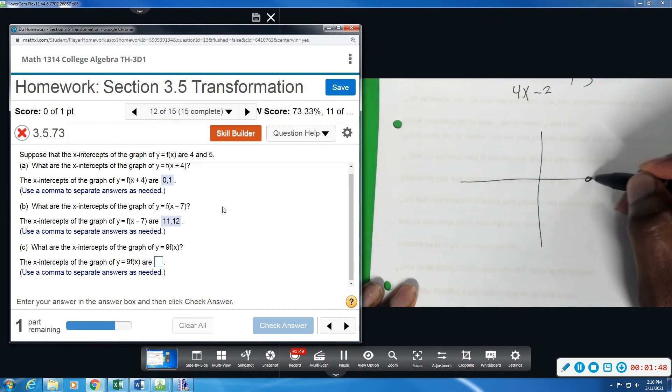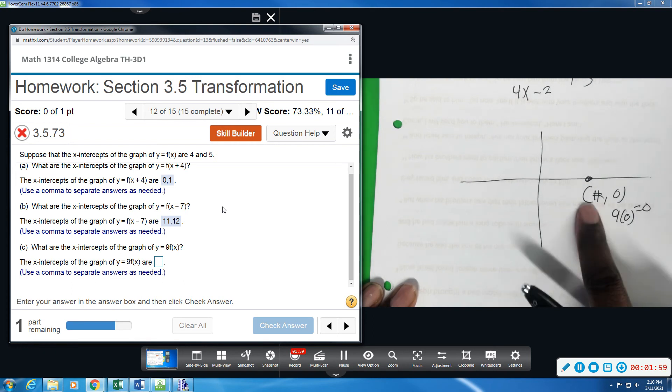So any point on the x-axis, we have an ordered pair. X is a number and y is 0. So if I multiply 0 times 9, it's still 0. It doesn't affect that x-intercept. It will be the same position.